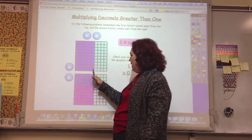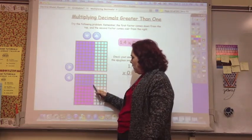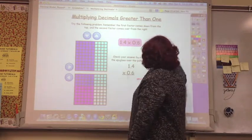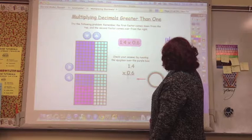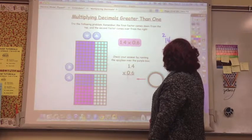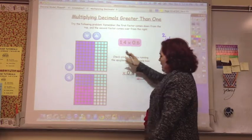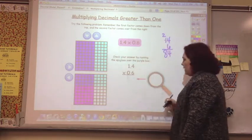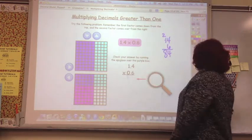And the part that's double shaded is what you would count. And it would be one, two, three, four, five, six, six across, times 14. So 14 times 6 is 84 hundredths, is double shaded. And so let's see if 84 hundredths is what we get.